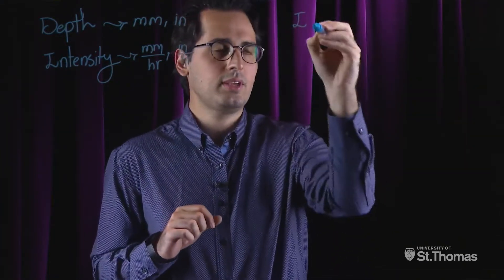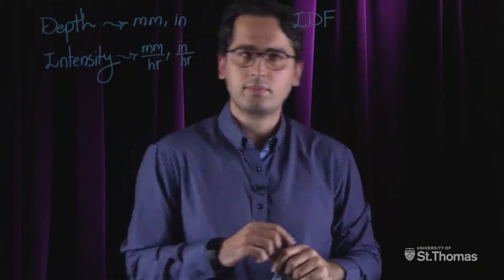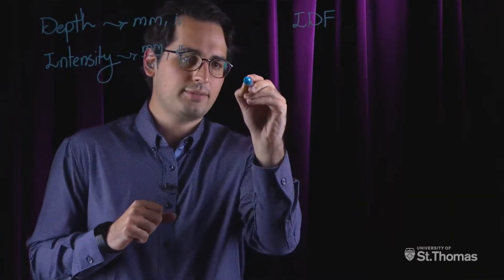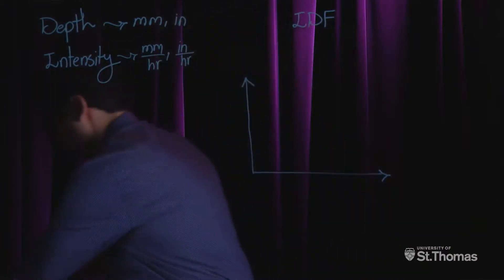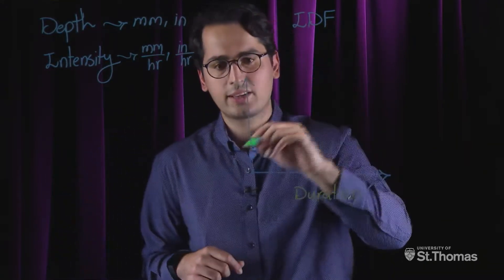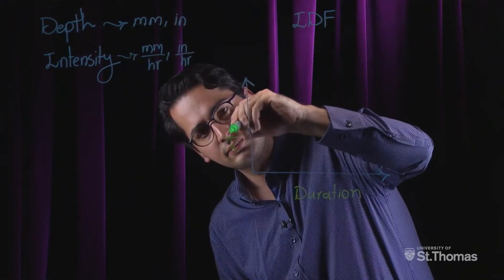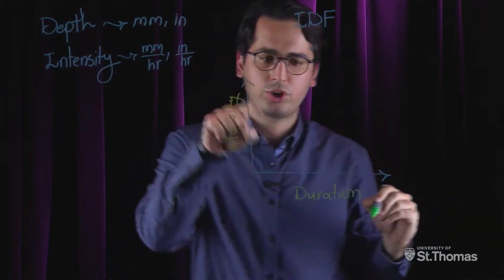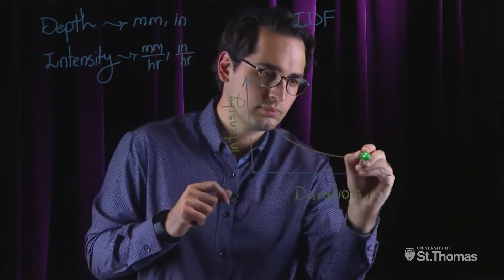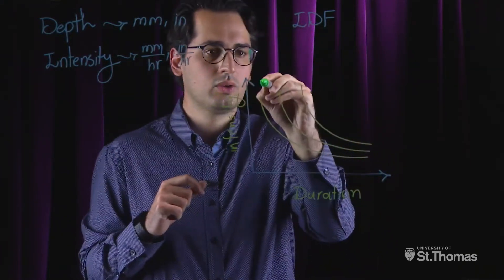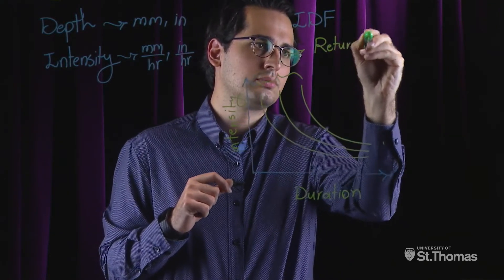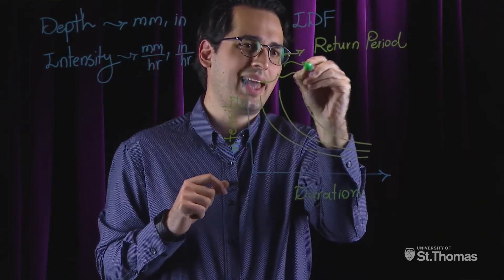I stands for intensity, D stands for duration, and F stands for frequency. Let's take a look at the general form of these curves. The x-axis would be duration, the y-axis is intensity, and different curves represent different return periods or frequencies.